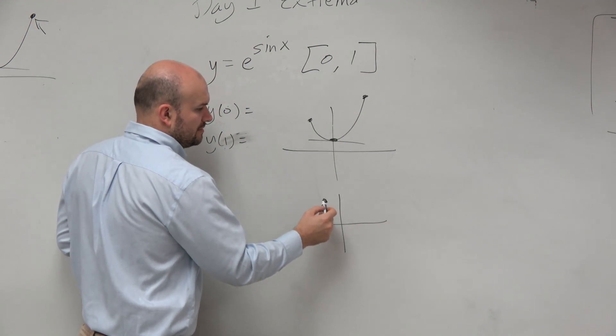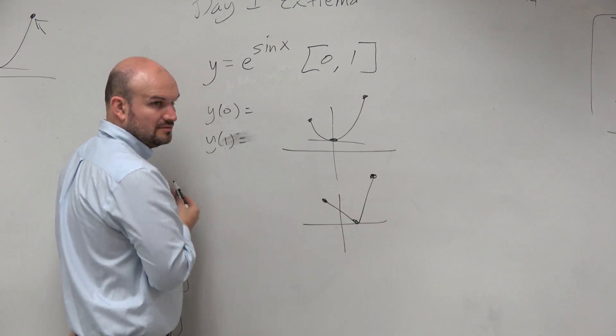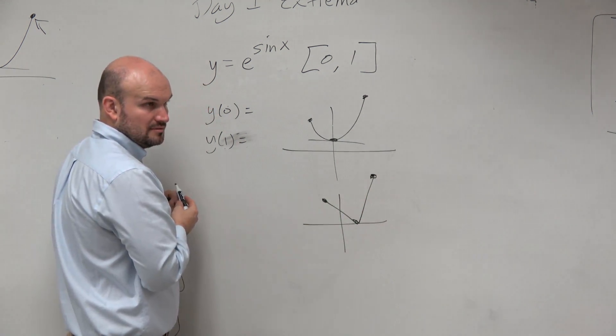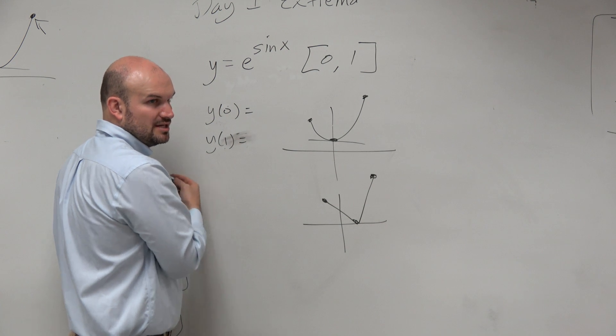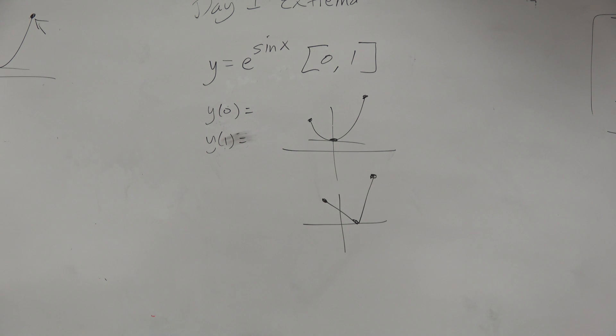Right? It could also be right there. Right? So it's not always where the derivative is equal to 0. So we've just got to be careful with that kind of thing. All right? But really important, guys: continuous closed interval. Continuous closed interval.